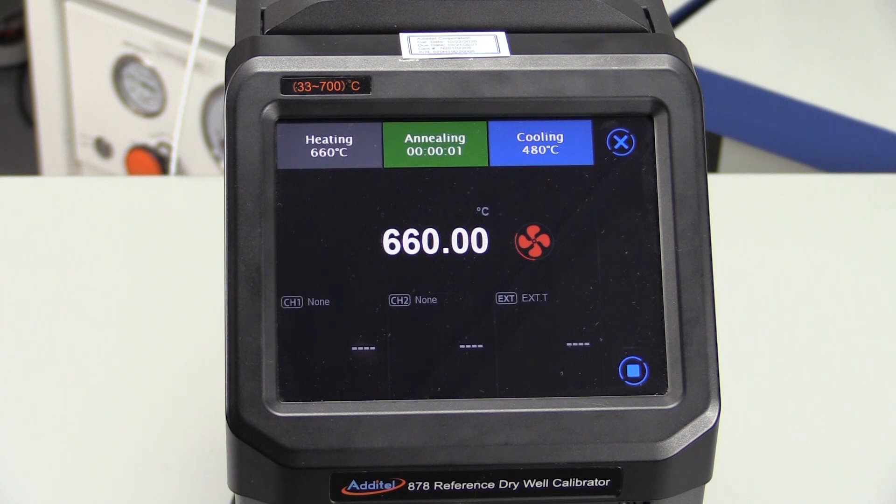As we jump ahead in the process, we can see that the 878-700 will move to the final stage of the annealing process and provide a controlled cooling period. Note that it is important to leave the probes in the 878 as it cools to prevent thermally shocking the probes.